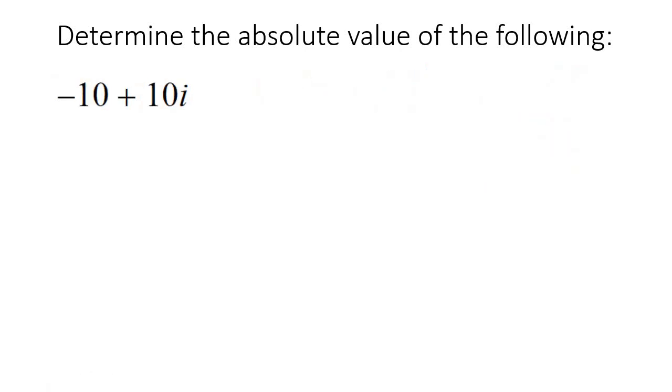OK, so we'll do this example and then one more. So you just take the real part, put it in brackets. Then the imaginary part, put it in brackets squared. That's going to give you 200. Then remember that you need to take the square root of 200 because that's how Pythagoras works. And that's going to give you 10 square root 2.